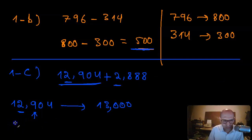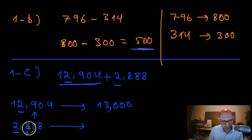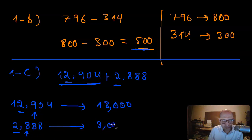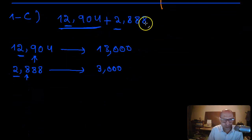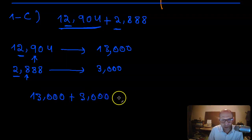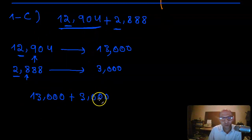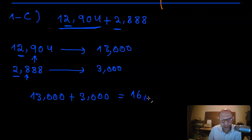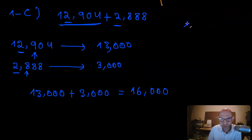For 2,888 rounded to the thousands place: the digit next to the thousands place is 8, which is ≥ 5, so I round up — the 2 becomes 3, giving 3,000. The calculation becomes 13,000 plus 3,000, which equals 16,000.